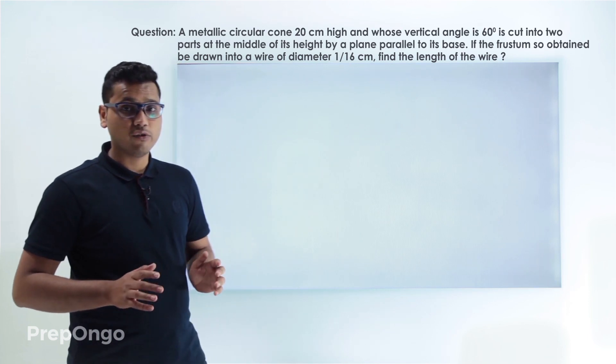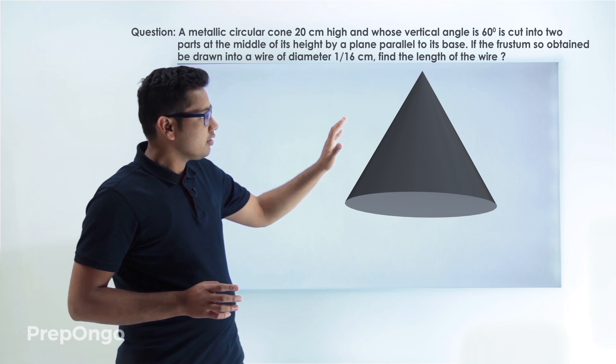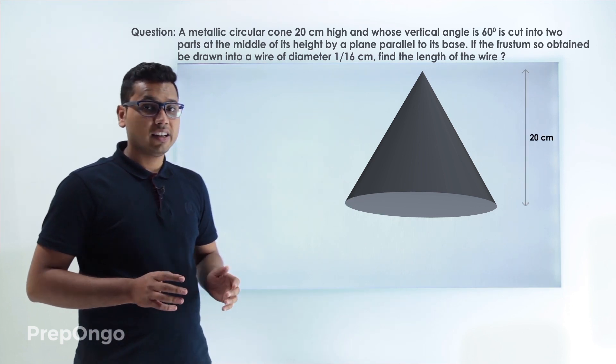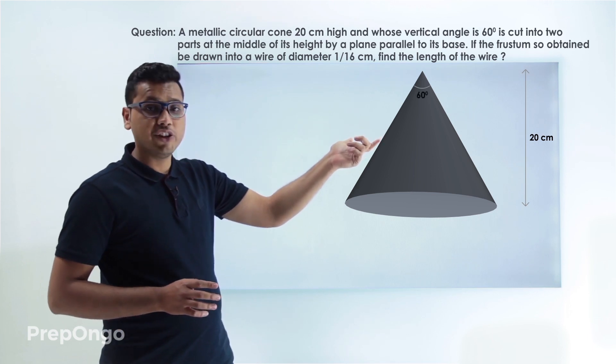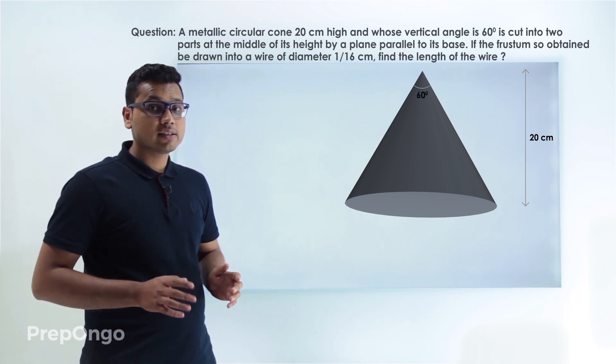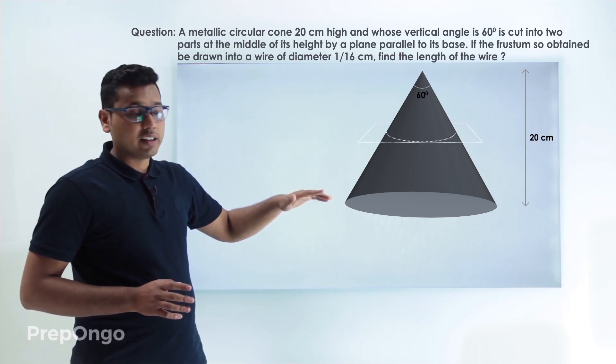So let us first understand what's happening here. We are given a cone here which is 20 centimeters in height and its vertical angle is given to be 60 degrees. Then we are said that it is cut in the middle of its height by a plane parallel to the base.